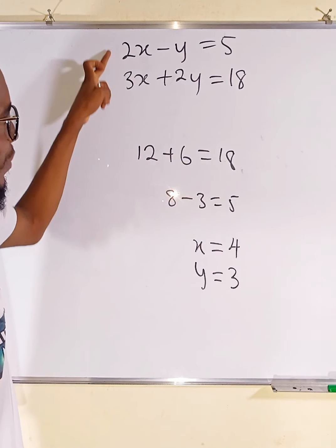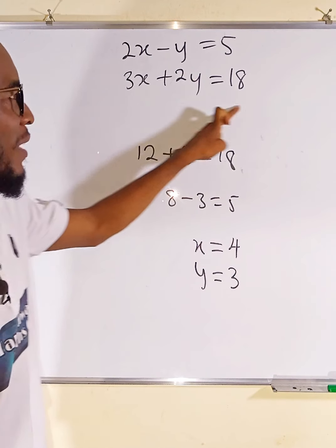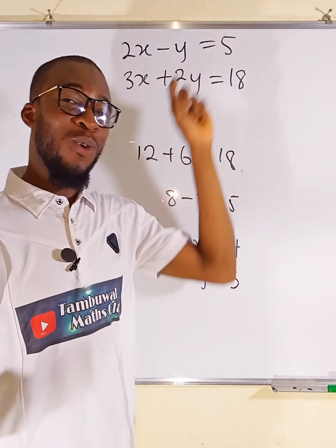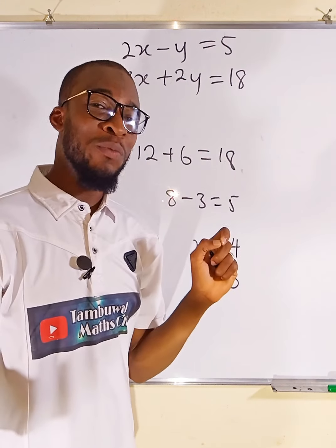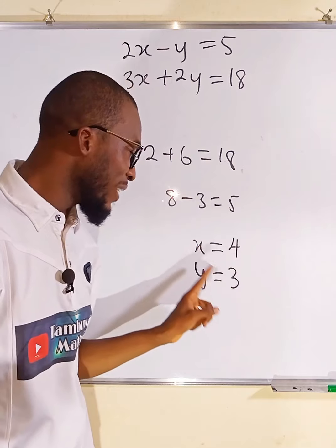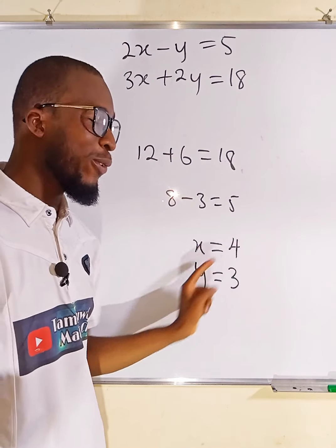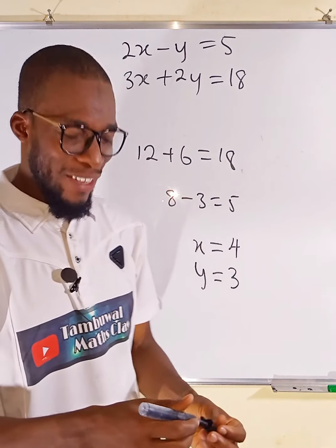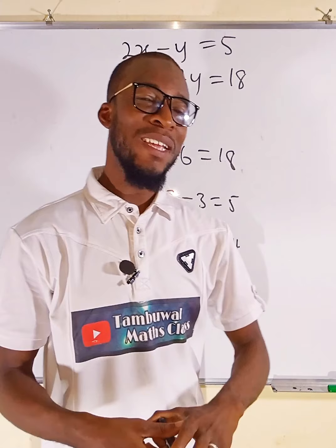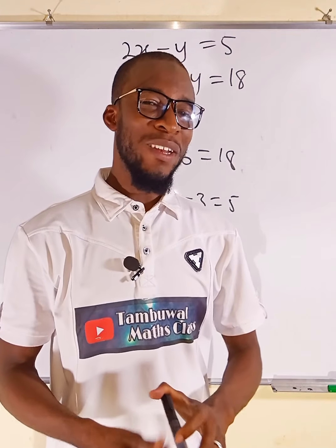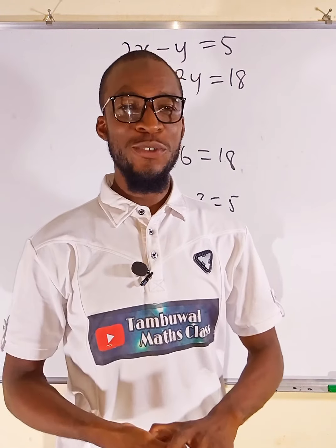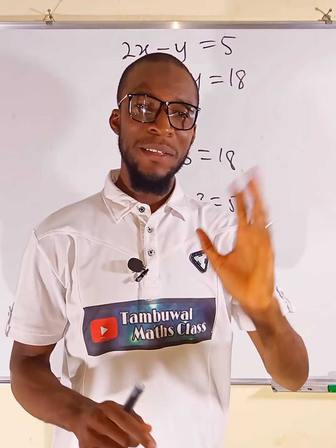Therefore, if you solve these simultaneous linear equations containing two or more variables, you have to get x equal to 4 and y equal to 3. This is just logic, and this is all I have for you today. Subsequently, I will be revealing so many more secrets to you. Bye bye.